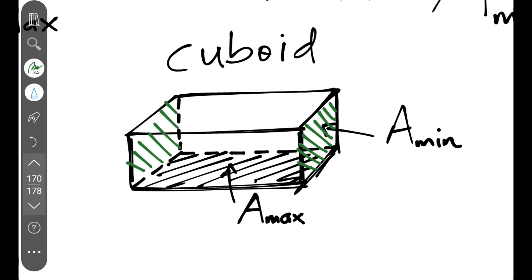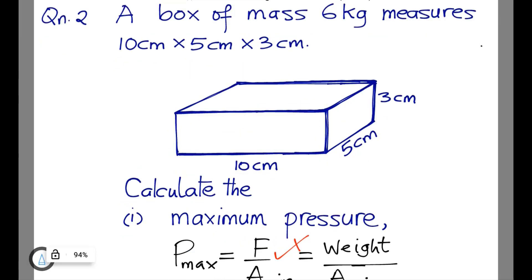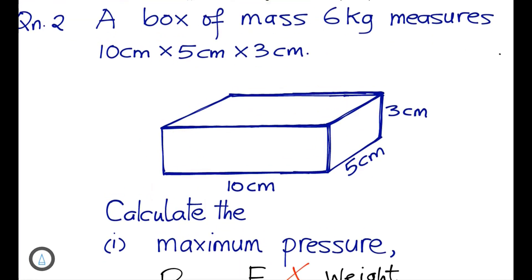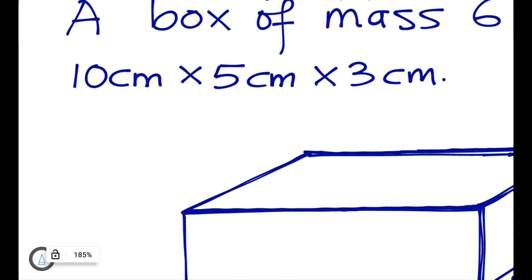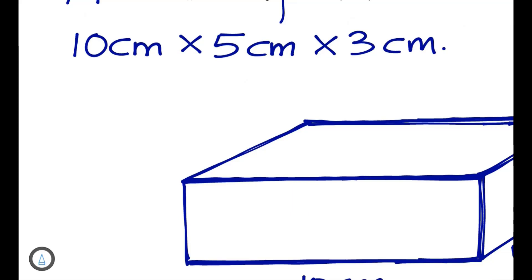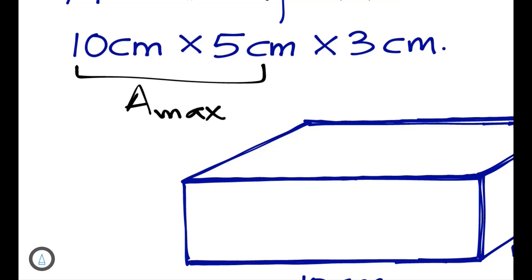Example: A box of mass 6 kilograms measures 10 cm by 5 cm by 3 cm. Calculate the maximum pressure. When dimensions are given in centimeters, convert straight away to meters. The biggest two dimensions — 10 and 5 — give the maximum area, and the smallest two — 5 and 3 — give the minimum area.